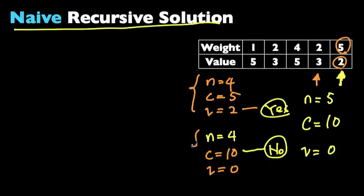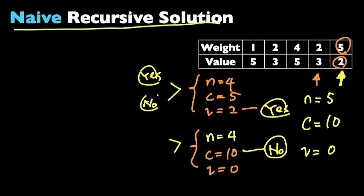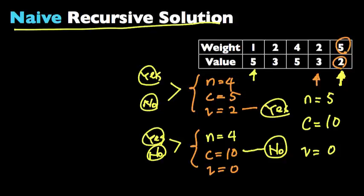For each decision, we ask ourselves for the next item: are we going to put it in the knapsack or not? So that's yes or no again. We keep repeating this process until we get to the last item. That's the idea behind our recursive solution, but it works slightly differently in the code, so let's see how that works.